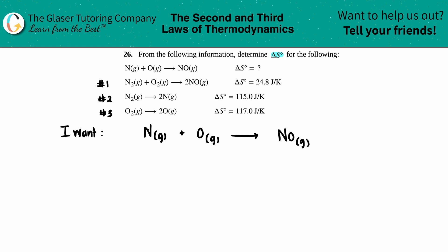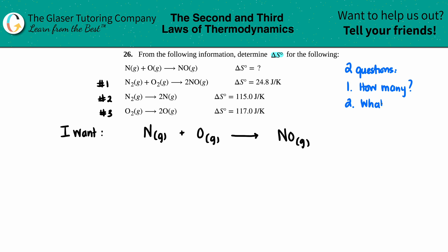Let's look at N(g) first. We always ask ourselves two questions with this type of problem. The first question is: how many of this component do you need? The second question is: what side do you want it on — left or right? For nitrogen, I want one of them, and I want it on the left side.